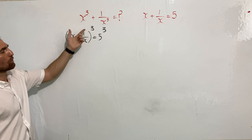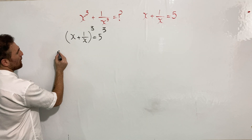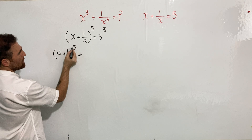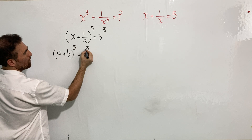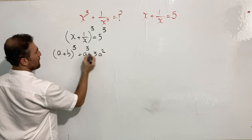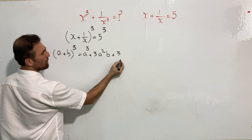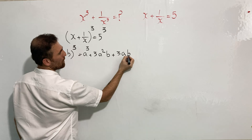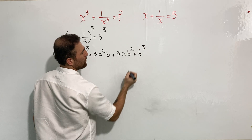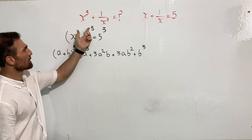To solve x plus one over x, cubed, I'm going to use an algebraic identity: a plus b, cubed equals the first term cubed, plus three times the first term squared times the second term, plus three times the first term times the second term squared, plus the second term cubed. We will use this identity to find the value of x plus one over x, cubed.